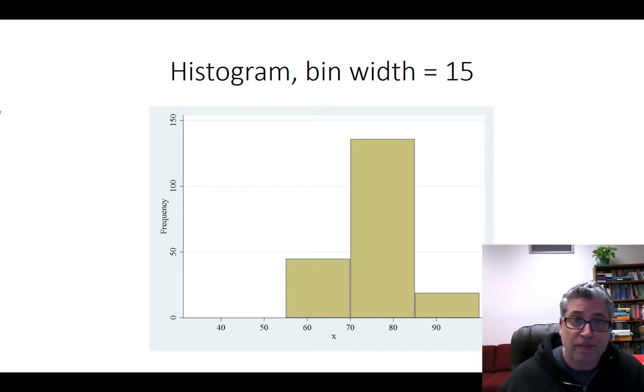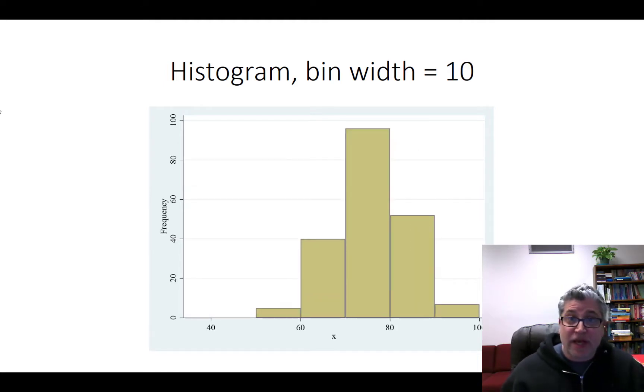If we increase the bin width again to 10, well now this histogram is really starting to tell me something. It looks like I've got a handle on what a reasonable maximum value might be and a minimum value. There's a mode, there's that peak in the top. It seems to be roughly symmetric, so the average is probably around here at around the 75 mark. I like this histogram, it seems to give me some useful information.